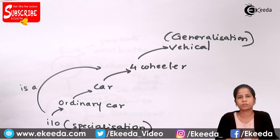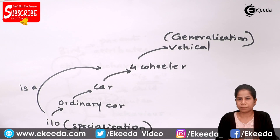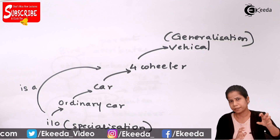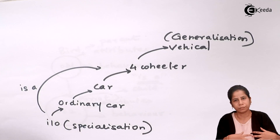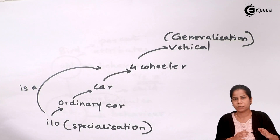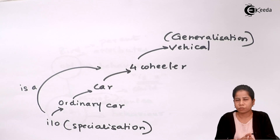So we have seen that inheritance is used for reusability — some attributes and behavior which are already there in the parent I will be inheriting, and I can also have my own attributes. That is all about inheritance.